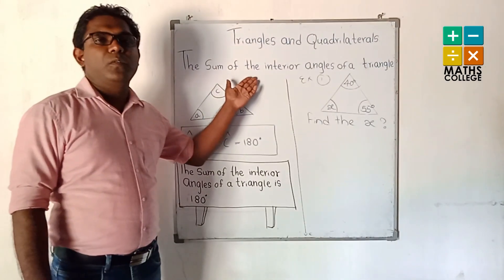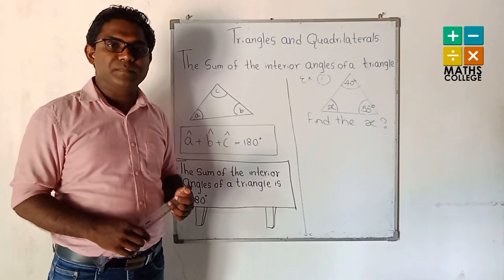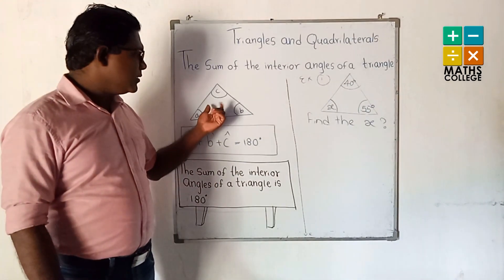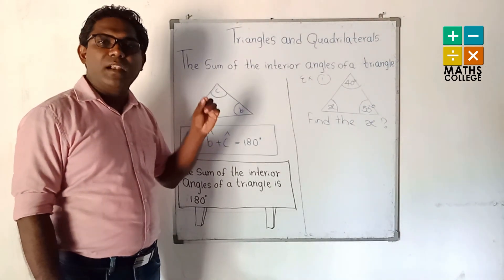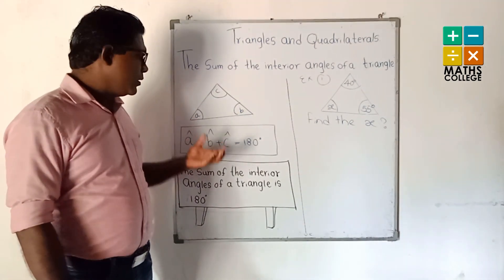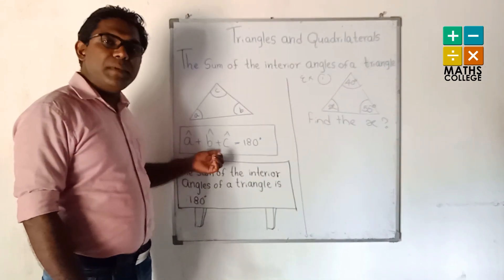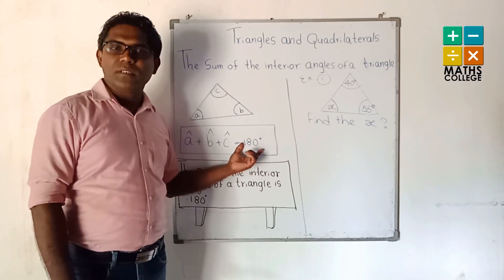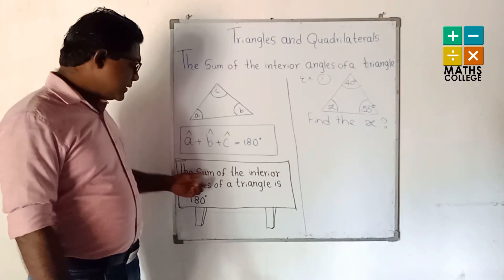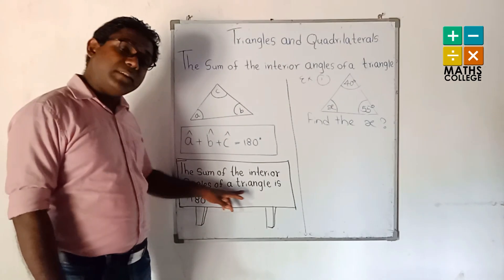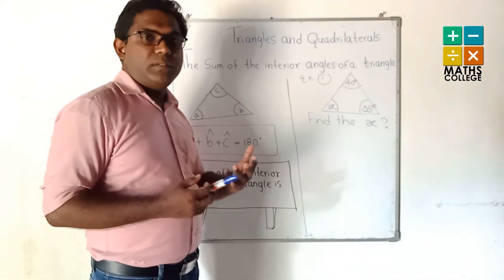Now the new topic: what is the sum of the interior angles of a triangle? The interior angles are A, B, and C. The sum of interior angles means A + B + C = 180°. We keep this in mind as a theorem: the sum of the interior angles of a triangle is 180 degrees.